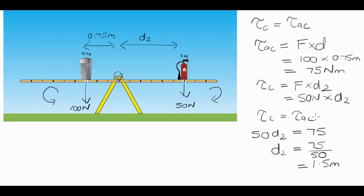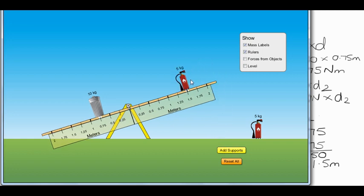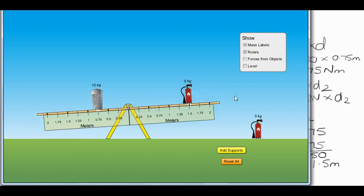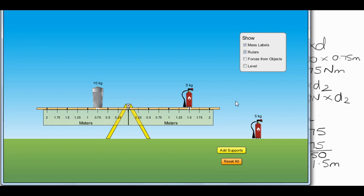So in theory, if we make this distance 1.5 meters then the seesaw should balance and it should be at torque equilibrium. Let's give this a go. So we take the fire extinguisher and we add it at 1.5 meters and with a bit of luck we should have a situation where clockwise torques equal anti-clockwise torques. And yes, we have achieved torque equilibrium.